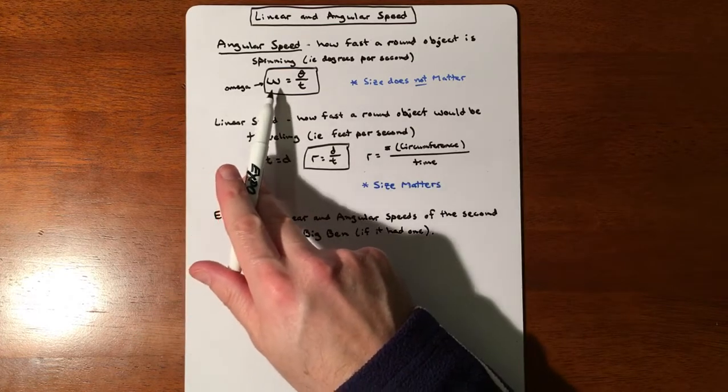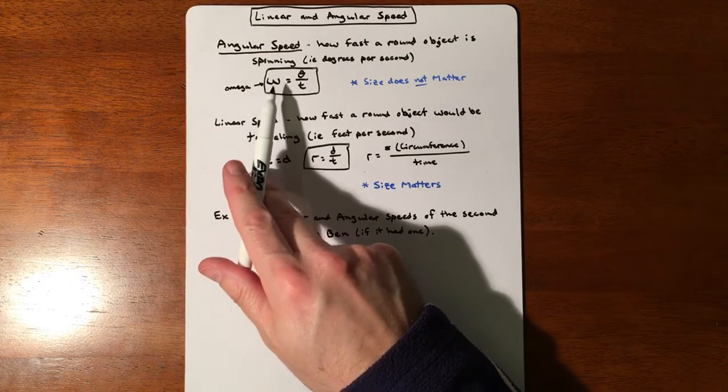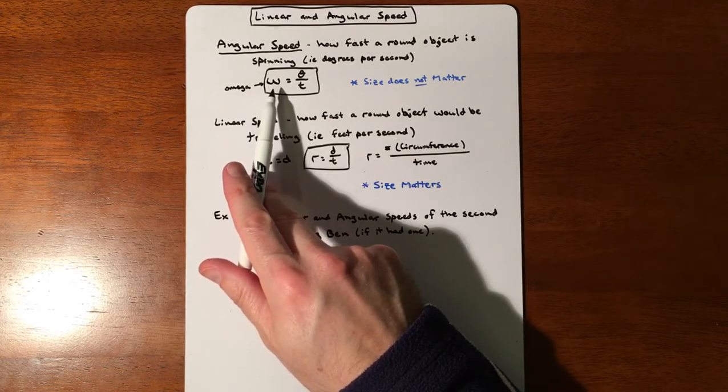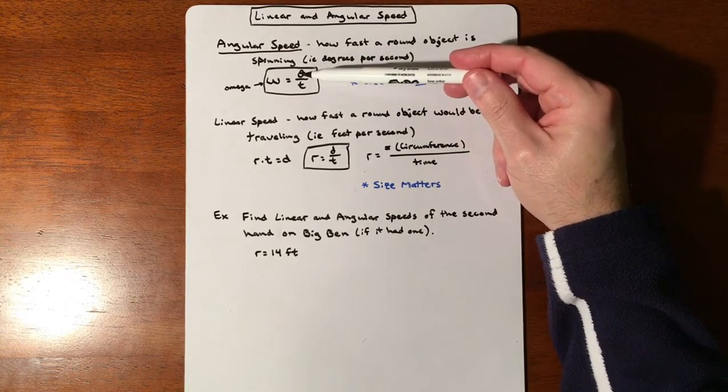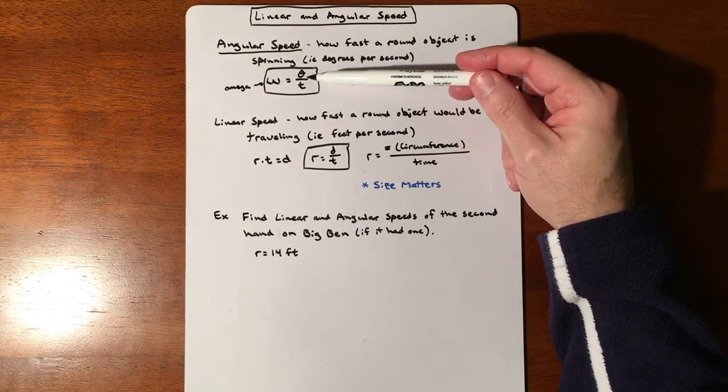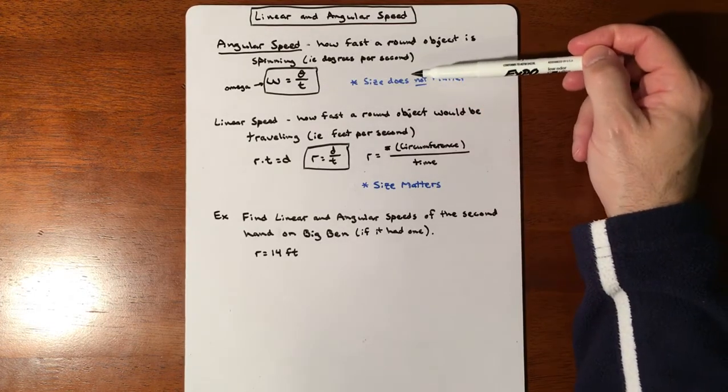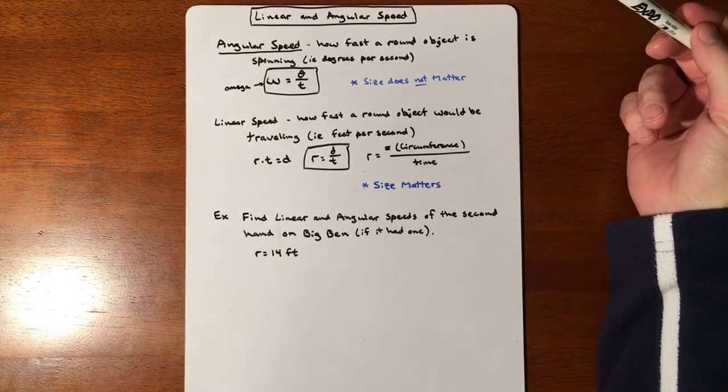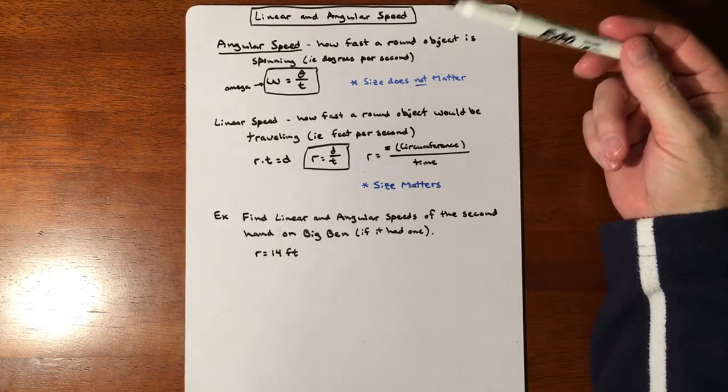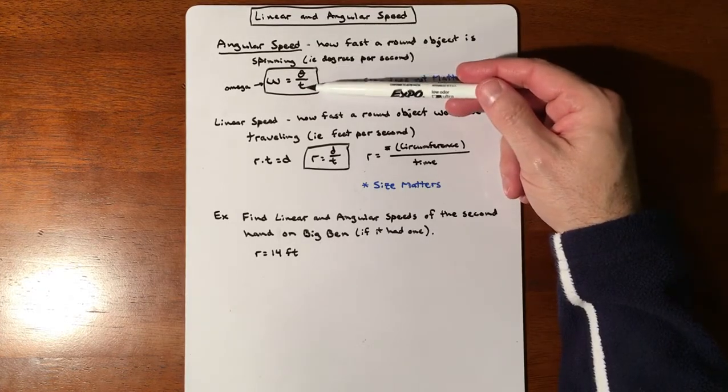The symbol for angular speed is omega, a fancy W, the Greek version. Basically, angular speed is straightforward - it's just your degrees divided by time or your radians divided by time. And it does not matter how big or small that object is. A very large clock versus a very small clock still goes 360 degrees in one minute.